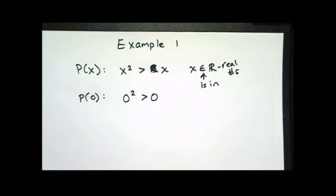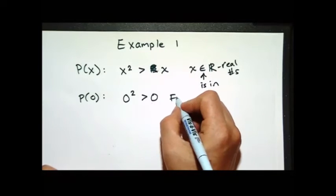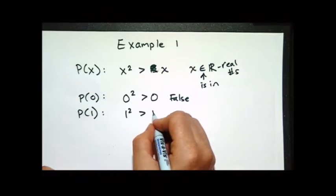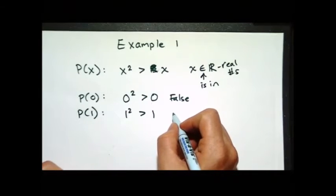So is that true or false? Great, that's false. So P of 1 is going to be 1 squared greater than 1. Is that true or false? False.